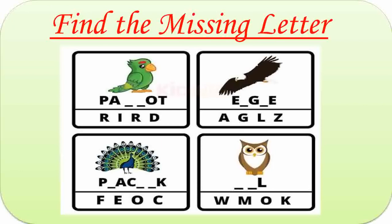Here, the name of the first word is Parrot. Missing letters are R and R. P-A-R-R-O-T. Parrot. Second one is Eagle. Missing letters are A and L. E-A-G-L-E. Eagle. The third one is Peacock. Missing letters are E, O and C. P-E-A-C-O-C-K. Peacock. The fourth one is Owl. Missing letters are O and W. O-W-L. Owl.